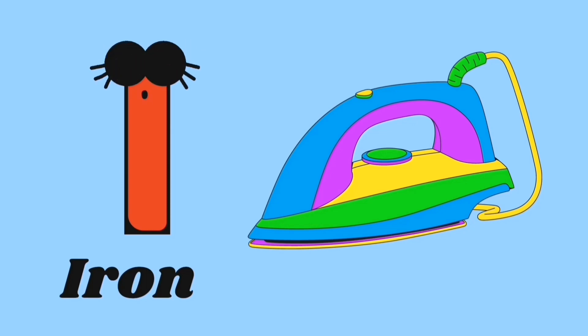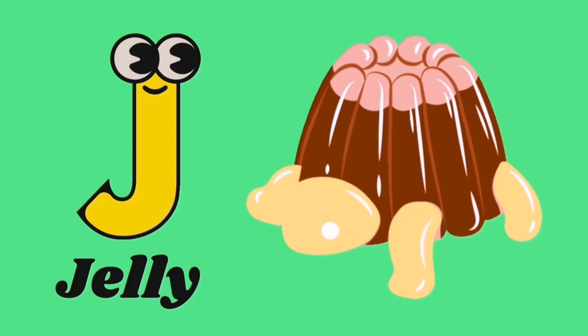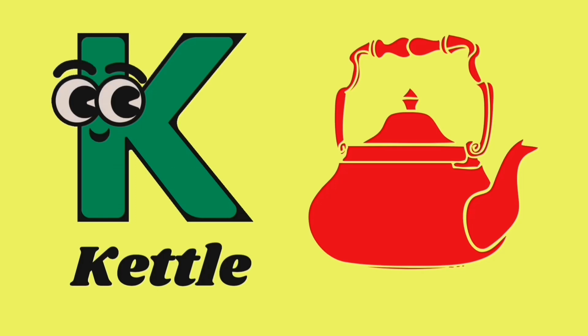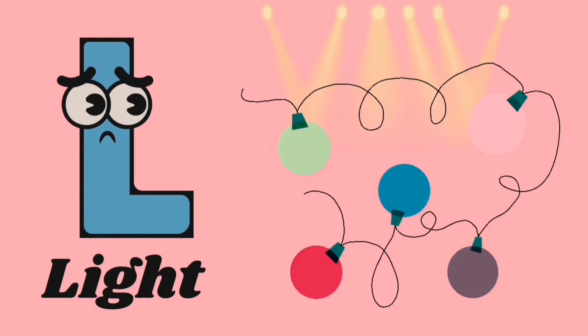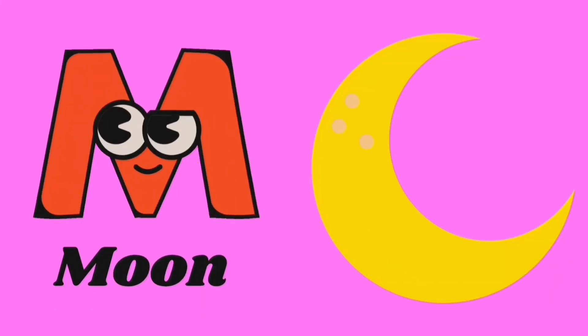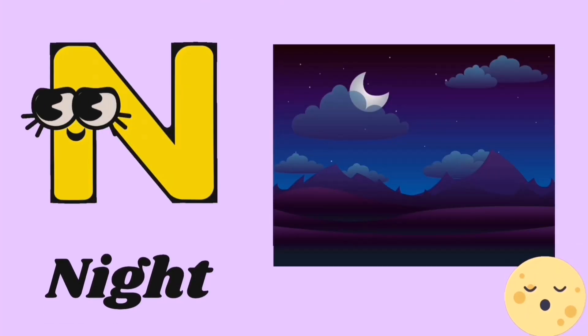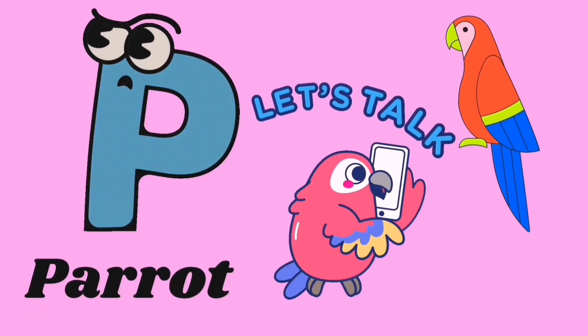I for iron, J for jelly, K for cattle, L for light, M for moon, N for night, O for onion, P for parrot.